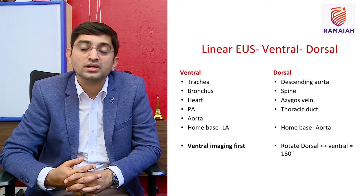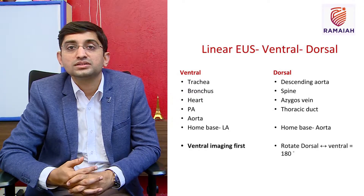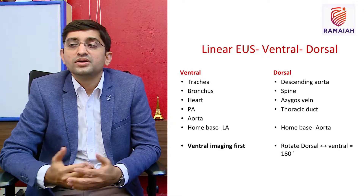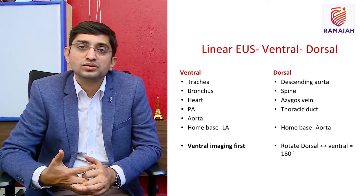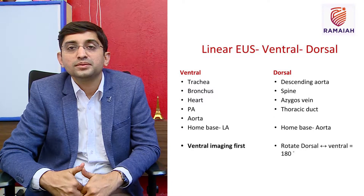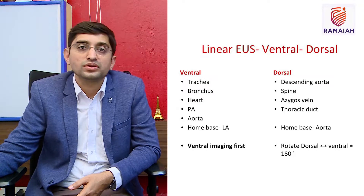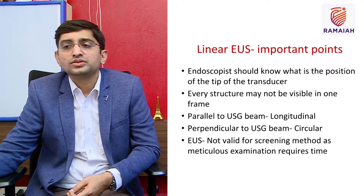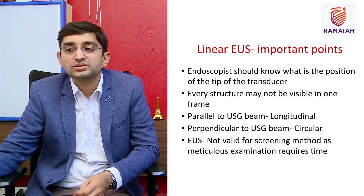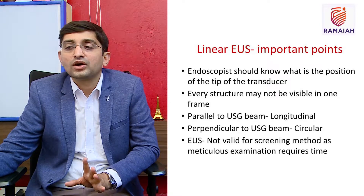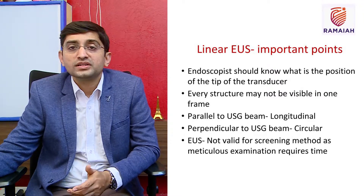Use different movements depending on whether you are looking at ventral or dorsal structures relative to the esophagus and stomach. Ventral mediastinal structures include the trachea, bronchus, all cardiac chambers, pulmonary artery, and aorta. The left atrium is a large anechoic structure very adjacent to the esophagus, making it a good ventral home base. Dorsal structures posterior to the esophagus include the descending aorta, spine, azygos vein, and thoracic duct, with the aorta used as the dorsal home base.